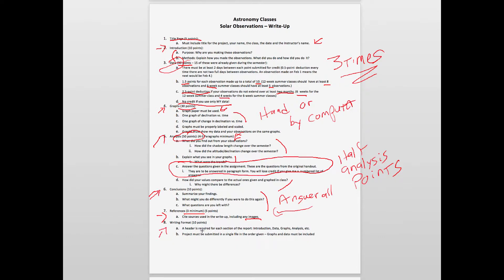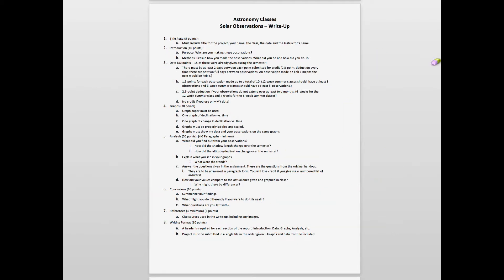Finally the writing format is worth 10 points. I do require a header for each section so you want to have introduction labeled, data and your data tables, graphs, analysis, and so on. Each of those sections needs a header with all the information included. For my online classes it must be completed in a single file and you have to do it in order. You have to go through everything from your title page down to your references in that order, and the graphs and data must be included within that final write-up. I want everything in one place as it makes it easier to grade. If you submit it in multiple files you will lose some of the credit for the writing format which is 10 points worth.